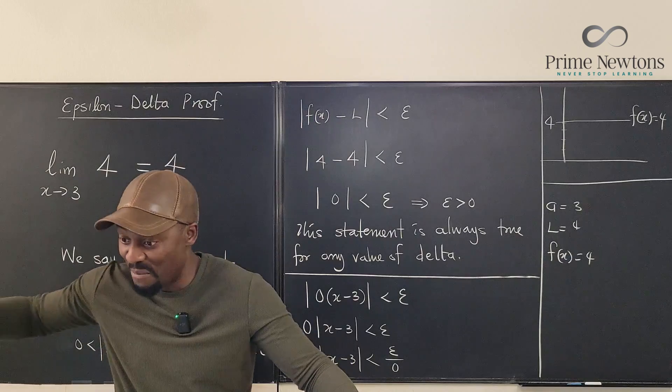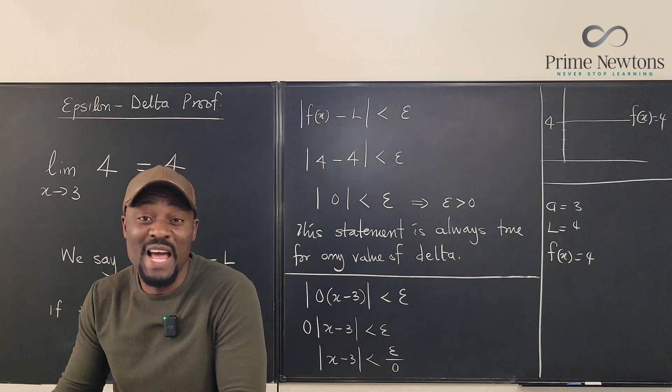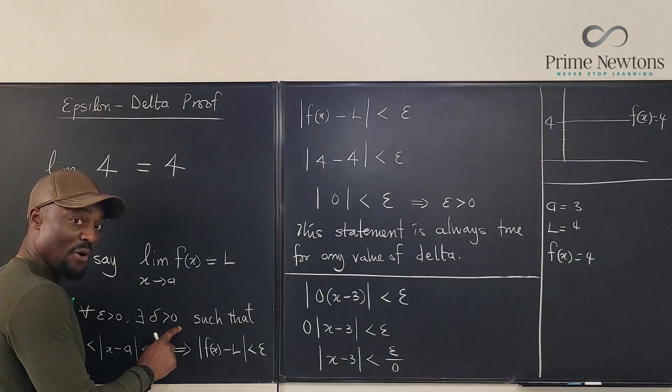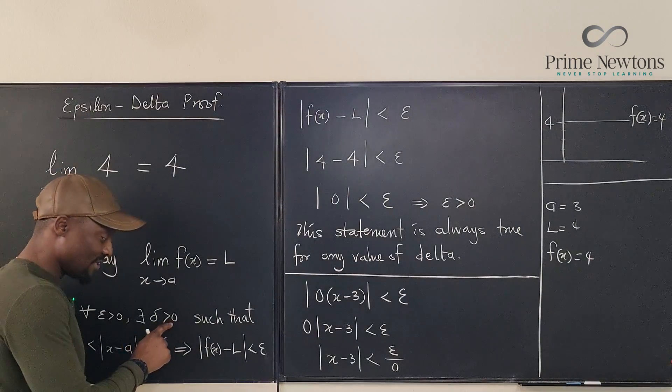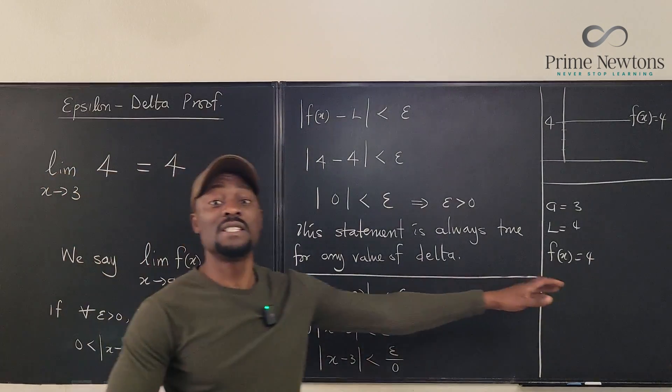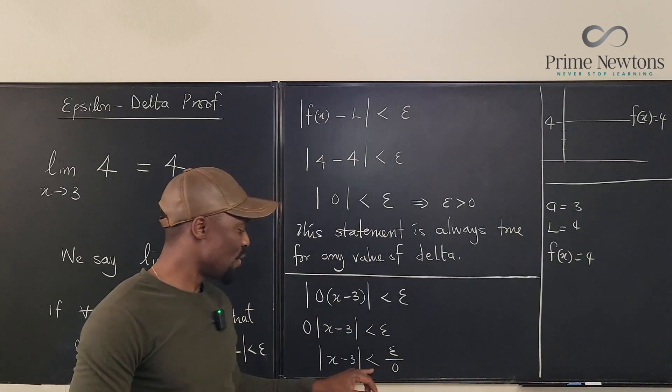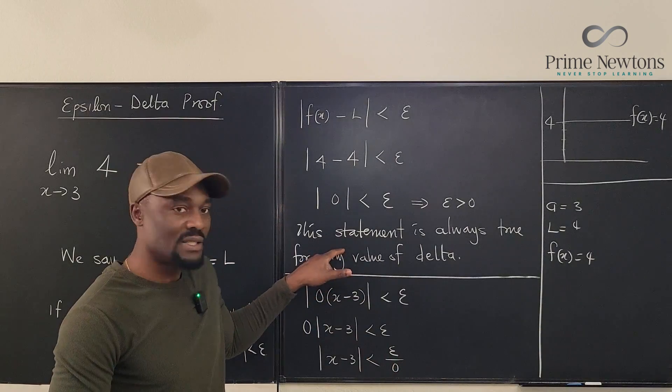But any number that is from 0, any number that is, remember that we said our delta has to be greater than 0. So any number greater than 0 up to infinity. That is, you have an infinite number of options when you want to choose delta is your delta. That's why this statement is correct.